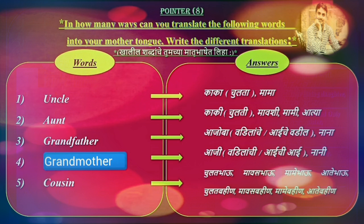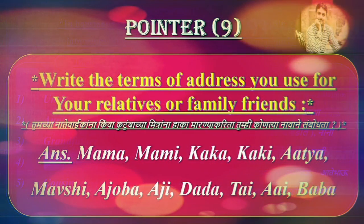Grandmother: Aji, Vadiil, Ayi, Tatsir, Ayi. Cousin: Chulat bahu, Mawas bahu, Maame bahu, Ate bahu, Chulat bahin, Mawas bahin, Maame bahin, Ate bahin.